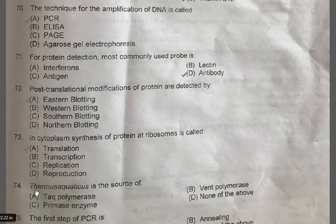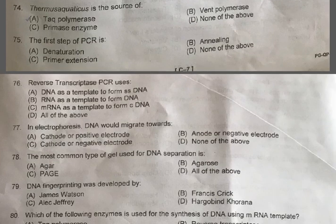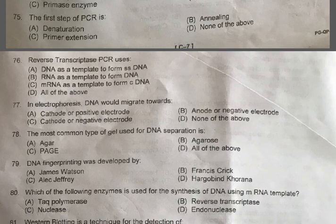Question 74: Thermus aquaticus is the source of — A: Taq polymerase, B: Vent polymerase, C: Primase enzyme, D: None of the above. The correct one is A, Taq polymerase. Question 75: The first step of PCR is — A: Denaturation, B: Annealing, C: Primer extension, D: None of the above. The first step is A, Denaturation.